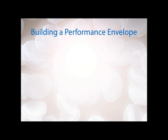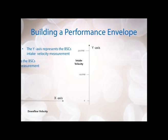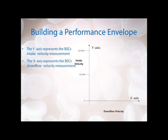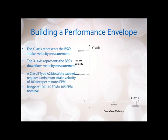We're going to use those two aspects to build our performance envelope. On the y-axis of this graph we're going to plot our intake velocity, and on the x-axis we'll plot the downflow velocity. A Class 2 A2 biosafety cabinet requires a minimum intake velocity of 100 feet per minute, as specified in NSF Standard 49. Due to the restrictions of the instrumentation used to measure airflow velocity, there's a variance range of about 5 feet per minute. To ensure you never go below 100 feet per minute even due to instrumentation variation, the nominal set point of the intake velocity will often be set at 105 feet per minute.